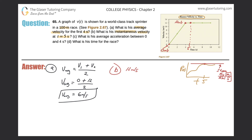Now let's take a look at part C. What is his average acceleration between 0 and 4 seconds? The graph is of velocity and time, so how does acceleration connect to velocity and time?